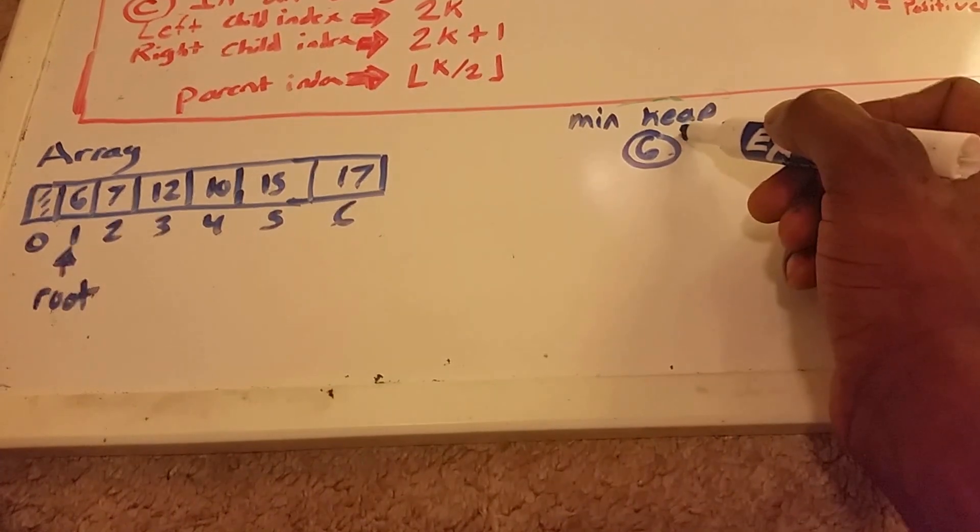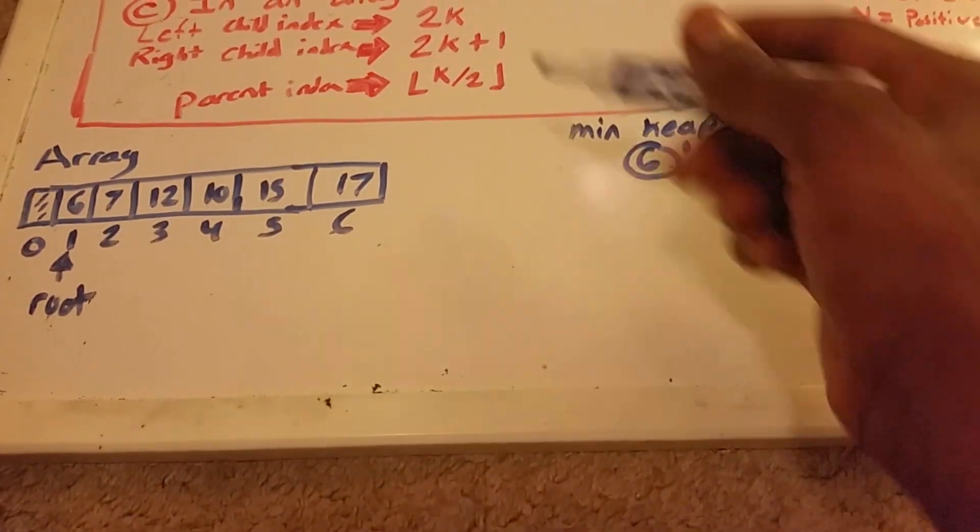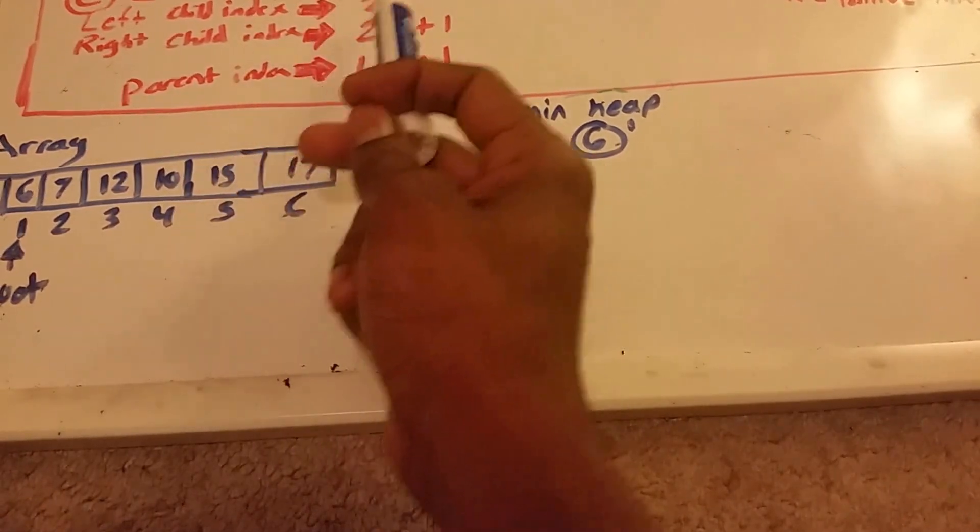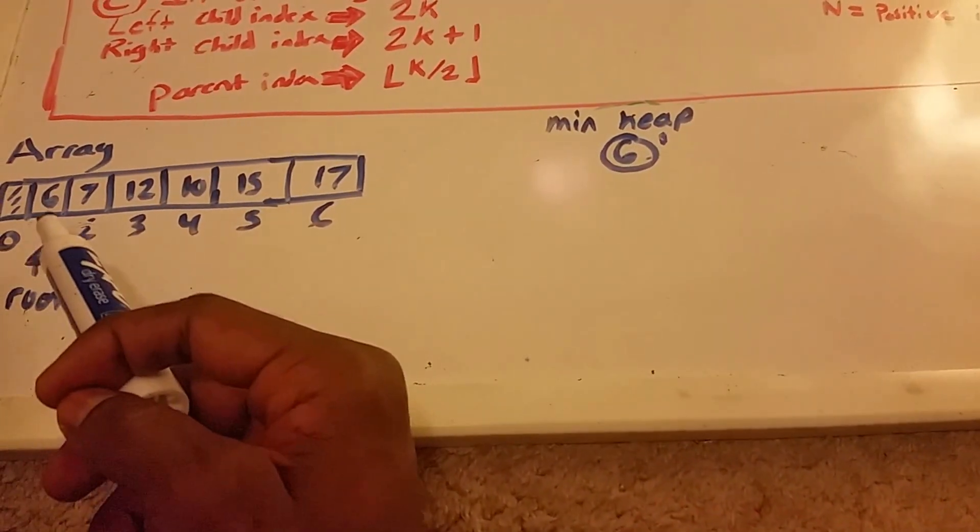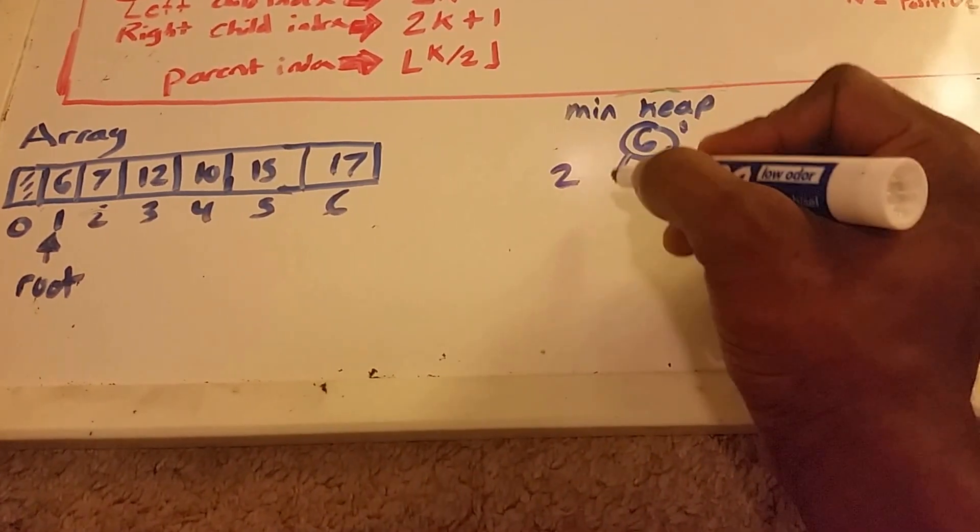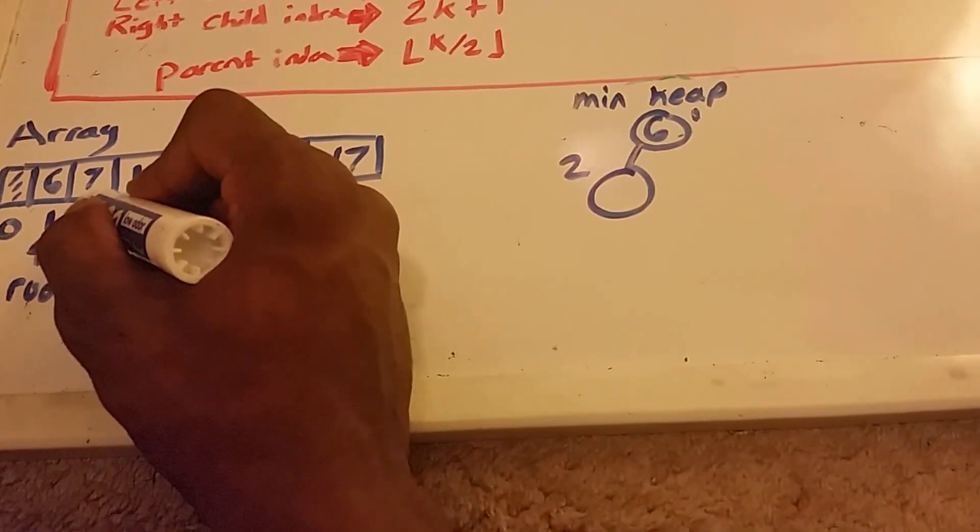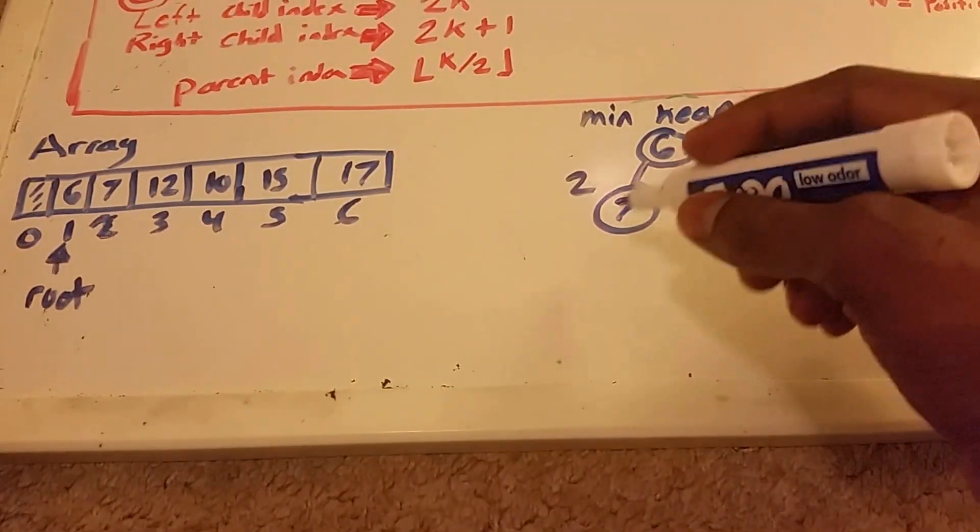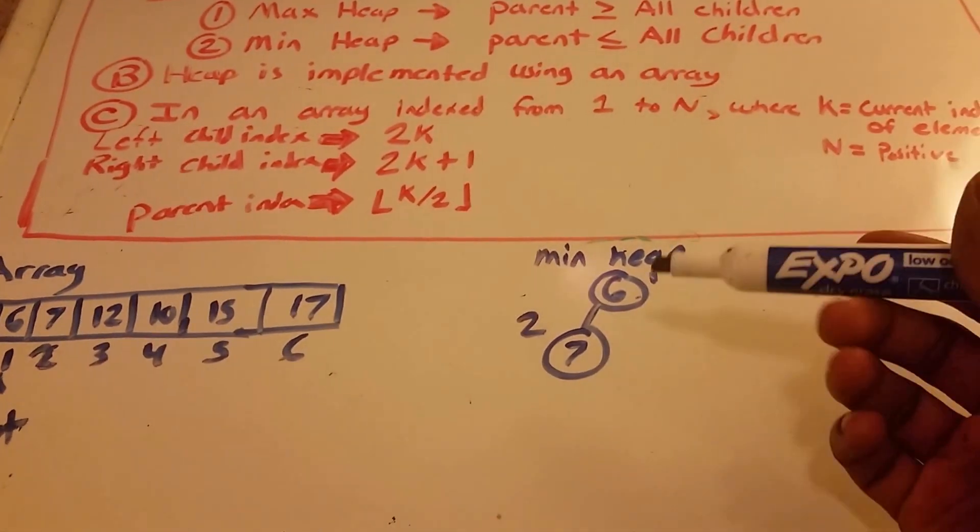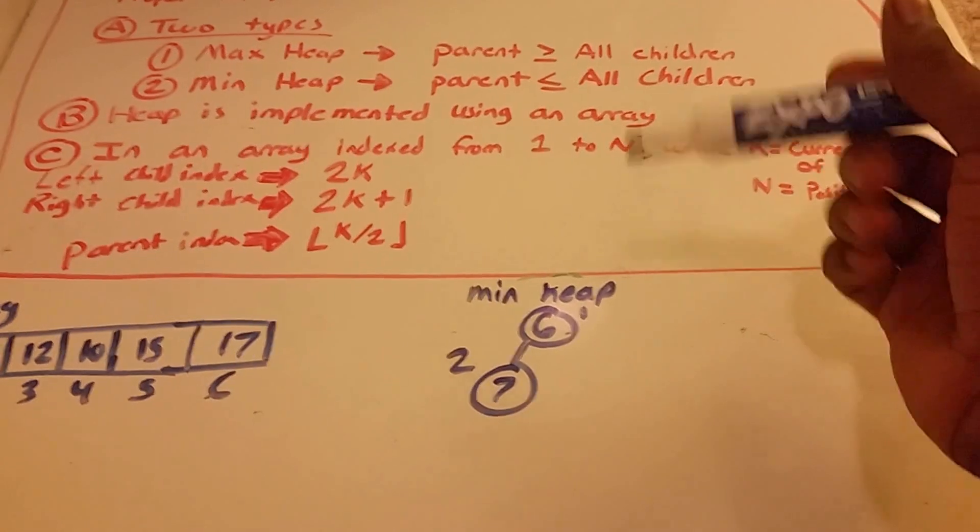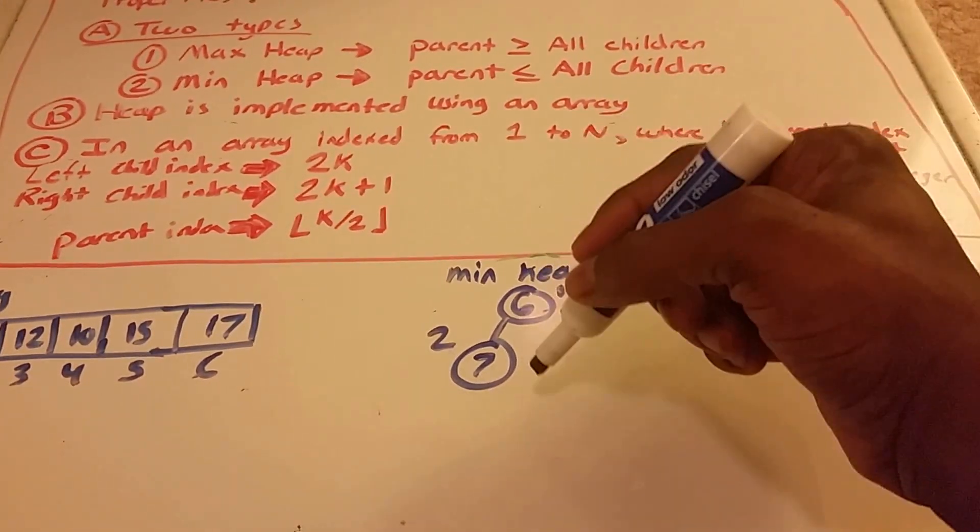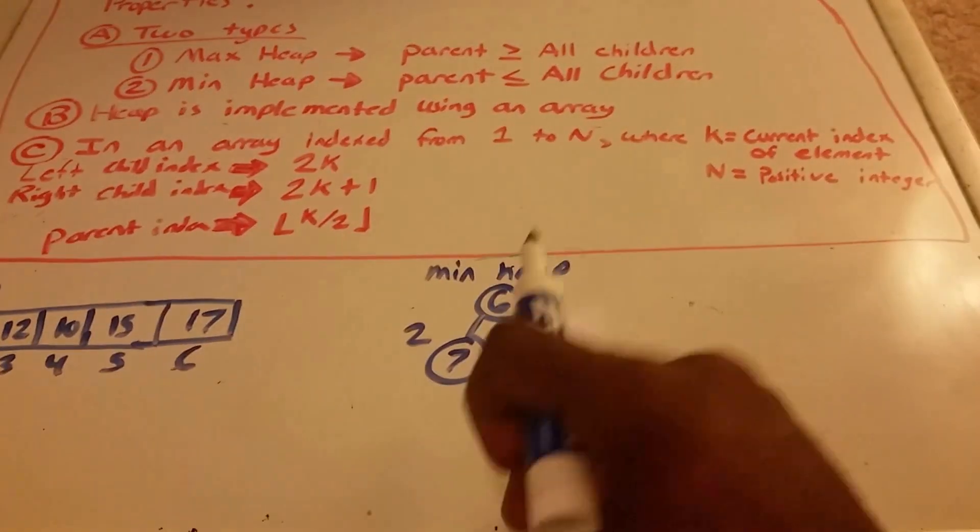We will create its children now. It's at index 1, and to follow the heap property, the left child index is 2 times k, where k is our index value, which is 1. So our left side is 2. We go to index 2 and get element 7. Now we check: does 7 follow the min heap condition, which is that this child is greater than or equal to its parent? It does. 7 is greater than 6.